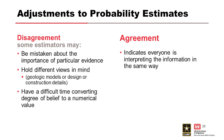Agreement between the estimators might indicate that everyone is interpreting the information in the same way. If there's a huge scatter and disagreement, it might indicate a poorly defined event, so adjustments to the event description or further decomposition into additional events might be necessary. Disagreement might also indicate that some estimators hold different views about geologic models, design, or construction details. It's important to understand why they hold that particular belief — the rest of the team might need to adjust their estimates if persuaded by the discussion, or the outlier may have misinterpreted the evidence.